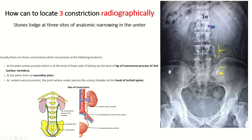Radiographically we can identify the constrictions of the ureter. The transverse process tip marks where the pelviureteric junction is present. This is the sacroiliac joint area of the second constriction, where the ureter crosses the pelvic brim. When the ureter enters the urinary bladder, the intramural segment is situated in front of the ischial spine.